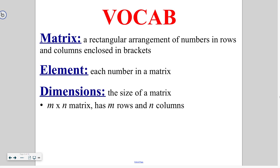We just want to familiarize you with what a matrix is going to look like. Each number inside of a matrix is called an element and then the dimensions are the size of the matrix. We refer to it as an m by n matrix where m is the number of rows, that's going horizontally, and n is the number of columns, that's going vertically.